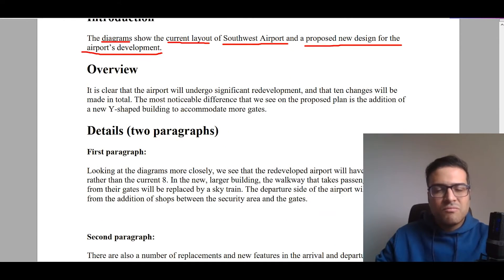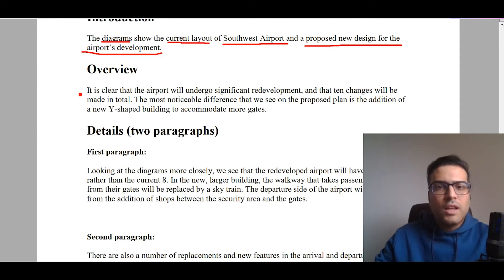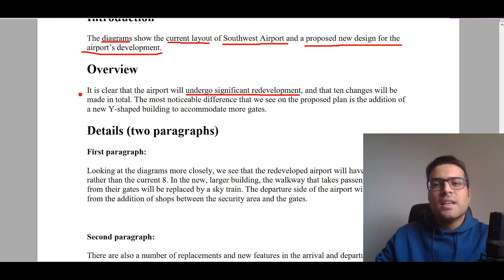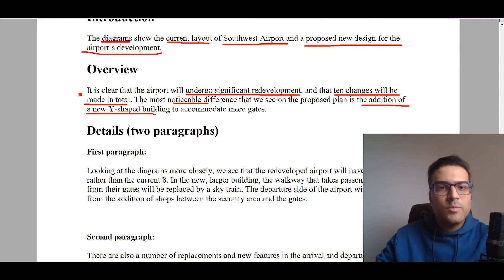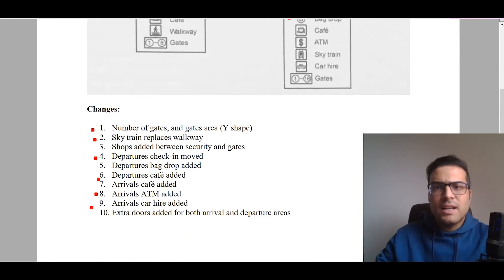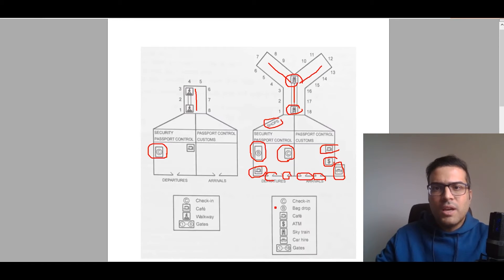For the overview, we plan to write two sentences — it's not a rule, but it's recommended. We say it's clear that the airport will undergo significant redevelopment, then add that 10 changes will be made in total. The most noticeable difference seen on the proposed plan is the addition of a new Y-shaped building to accommodate more gates — this is one of the major changes.